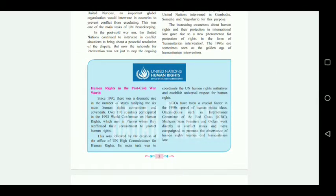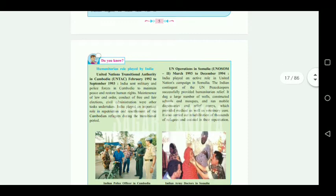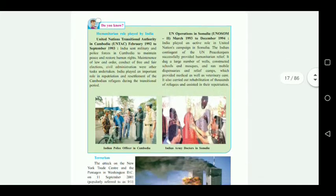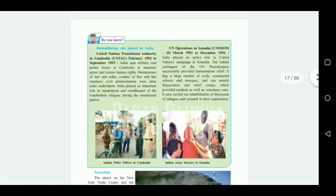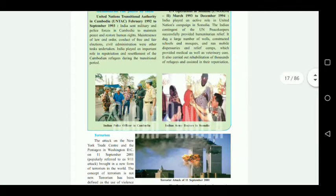On page number five, the blue box on United Nations and Human Rights is completely cancelled. That is, beginning from 'Human rights in the post cold war world' up to 'humanitarian law' at the end. After that, coming to page number six, the green box on 'Humanitarian Role Played by India' — the entire InShort box at the end is also cancelled.